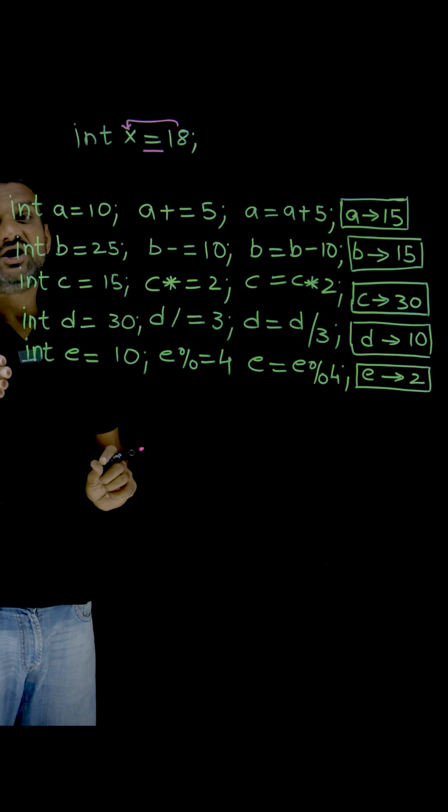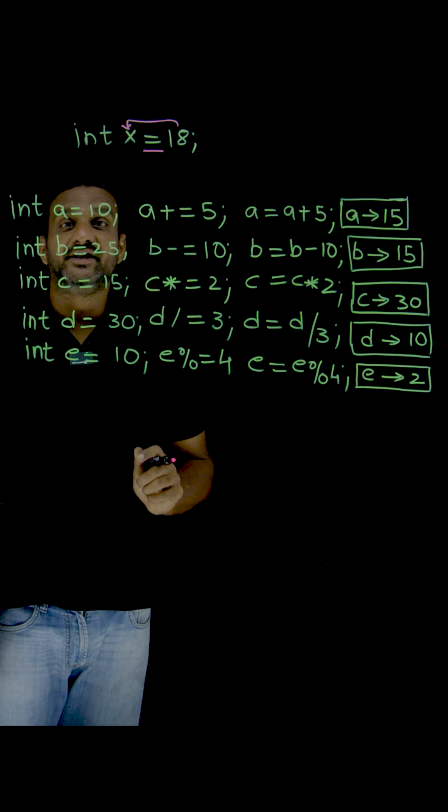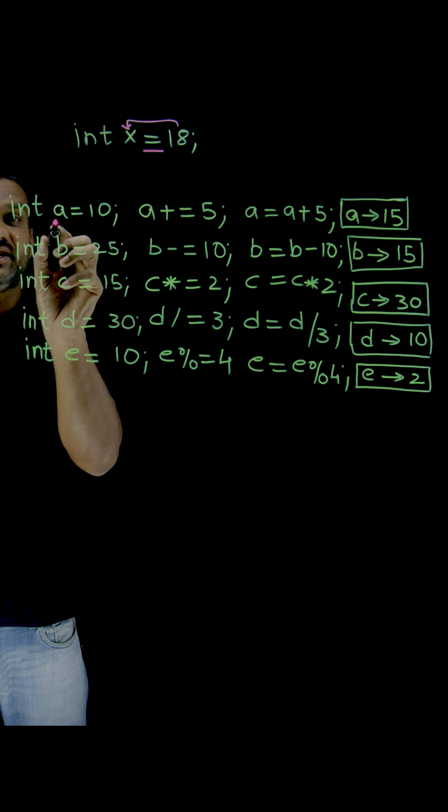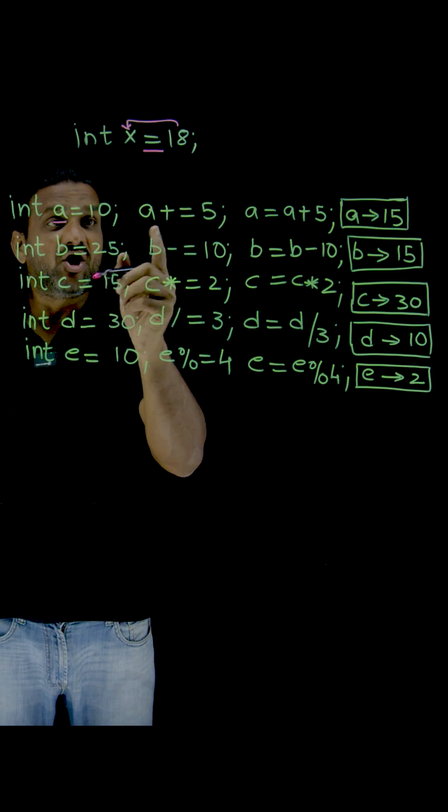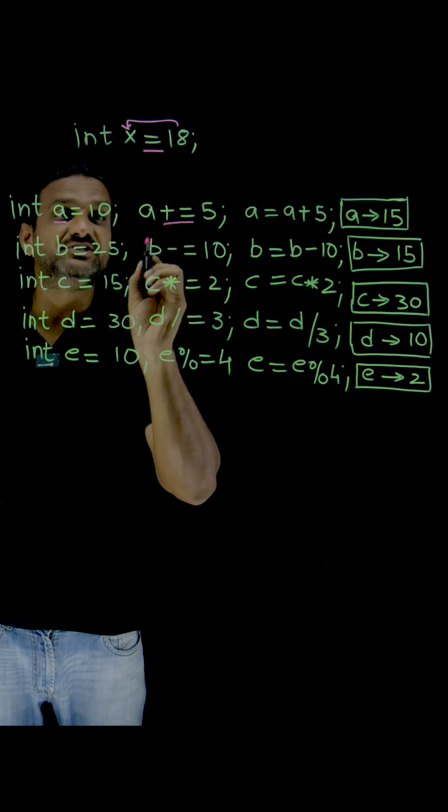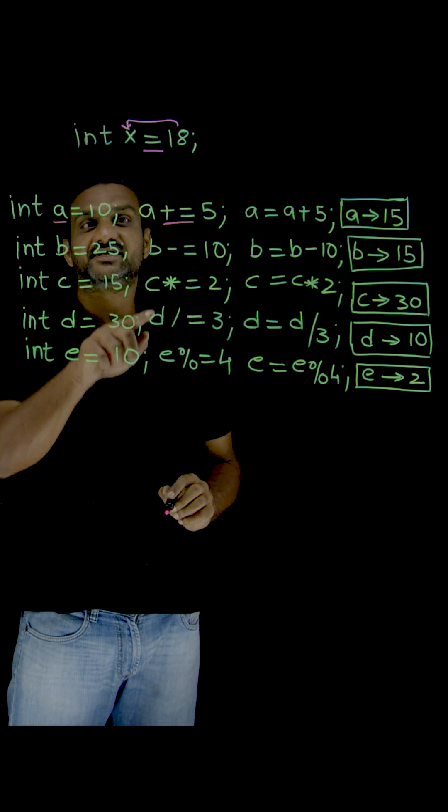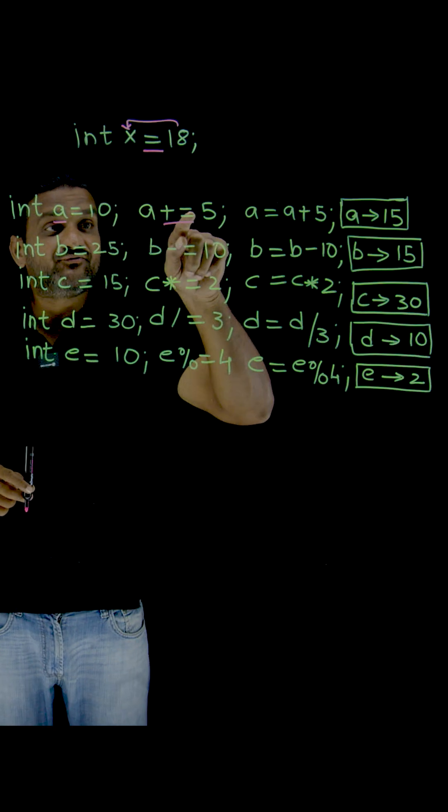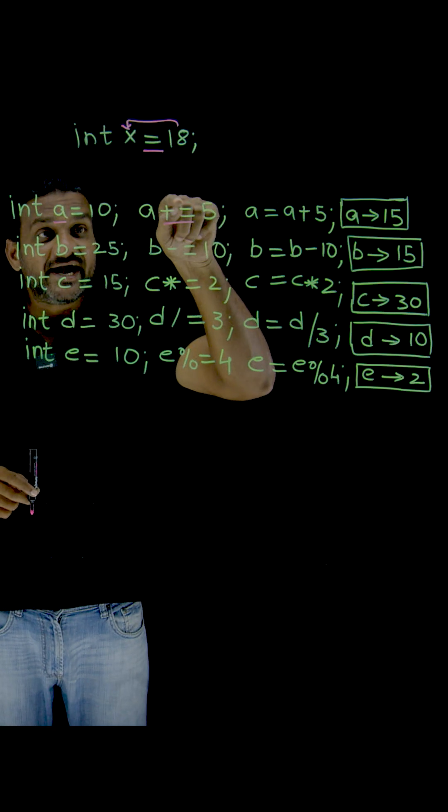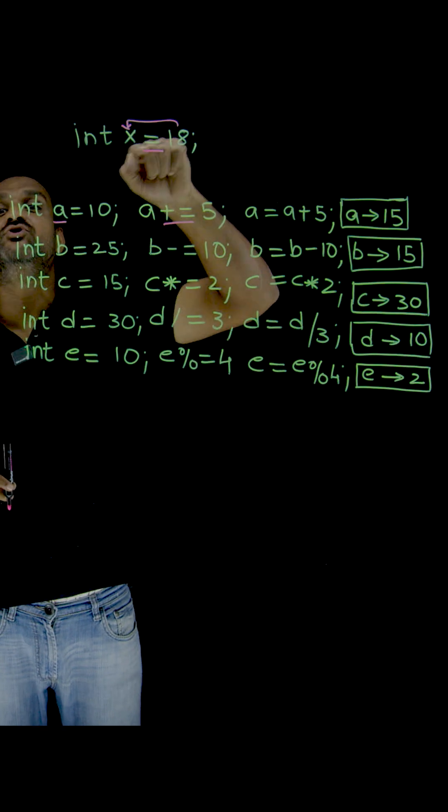What about the remaining five operators? Here I have taken a variable a and the value of a is 10. Now the operator plus equal to (+=) is used. This is a compound assignment operator. What's happening here is the value 5 is added to the existing value of a.